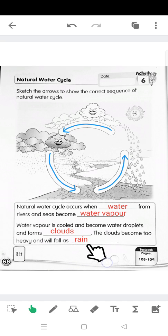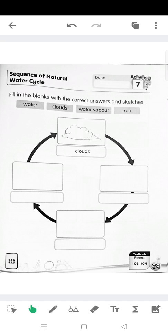Now let's look at next page, page 69. Sequence of natural water cycle. Same like the previous exercise. Fill in the blanks with the correct answers and sketches. There's water, clouds, water vapour and rain. And it's given here clouds.